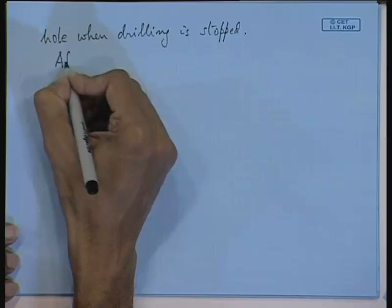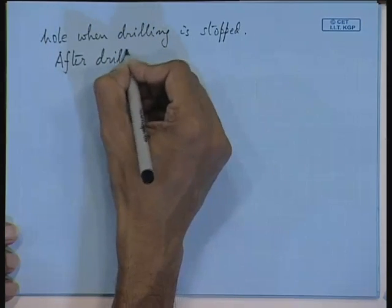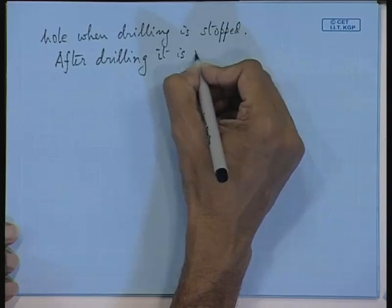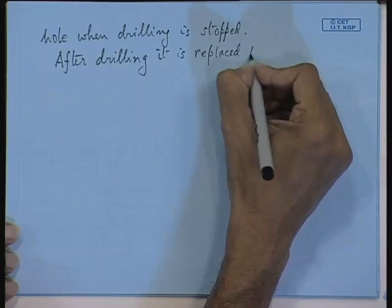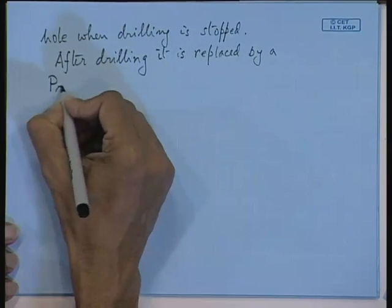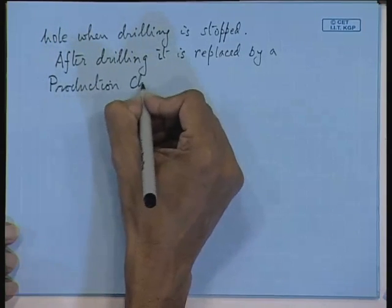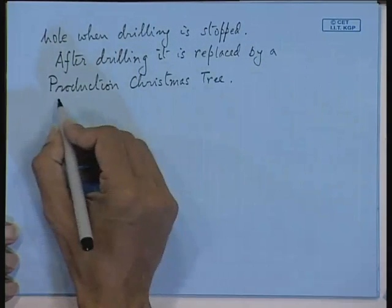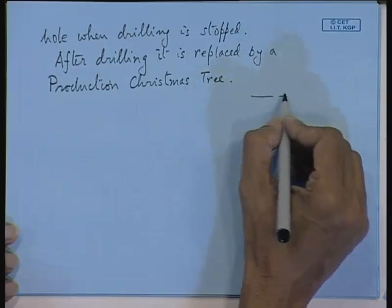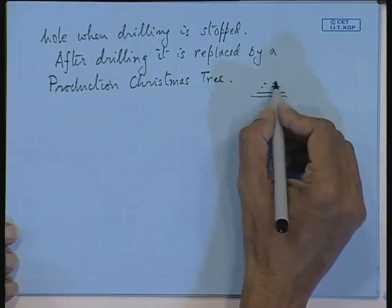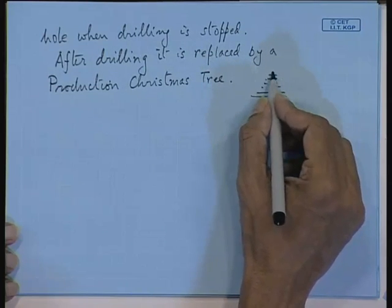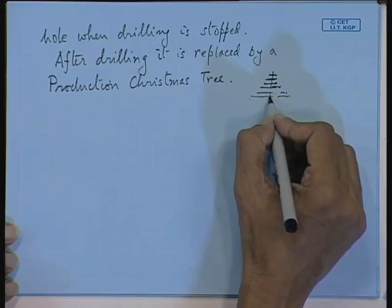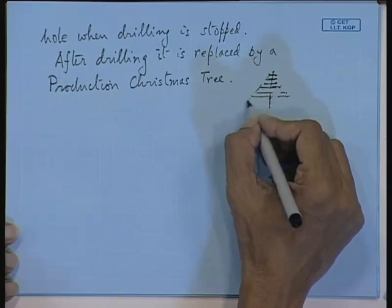After drilling, the BOP is replaced by a production Christmas tree. A Christmas tree is a set of valves progressively decreasing in size — you are decreasing the pressure in stages from bottom to top, so the size of the valves goes down as pressure decreases going upward.